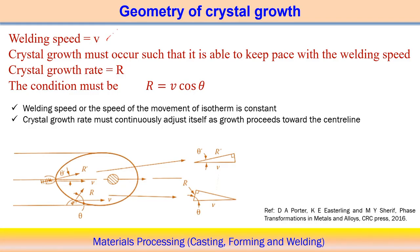Welding speed is V and crystal growth rate equals R. Therefore, this condition must be satisfied: R = V cos θ. Here, this is the growth rate at any point, perpendicular to the interface, which can be calculated as V·cos θ. The angle θ can vary — at the centre point θ equals 0 degrees, and at the edge θ equals 90 degrees. So θ can vary from 0 to 90 degrees, and accordingly the growth rate will vary to be compatible with the welding speed.